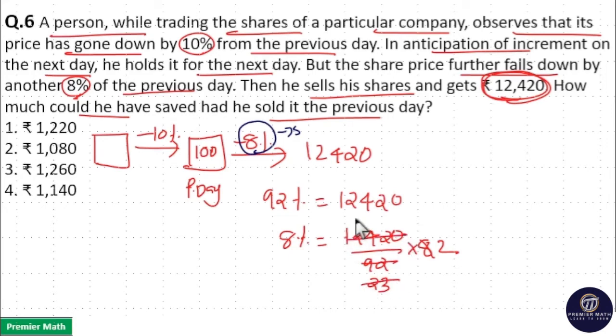And 23 goes 5 times in 124. 23 into 5 is equal to 100 plus 15, 115 remaining 9. So, 23 goes 4 times in 92 and remaining 0. So, 8% value is equal to 540 into 2, 1,080. Option 2 is your answer.